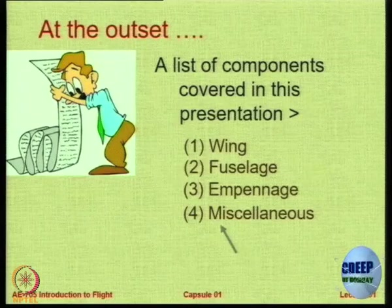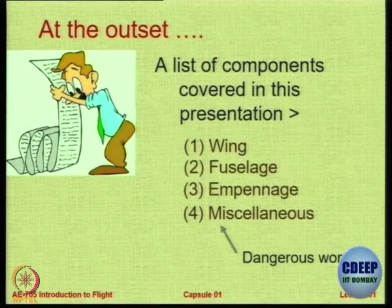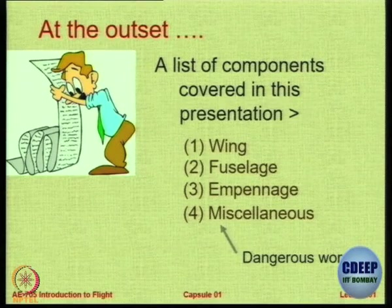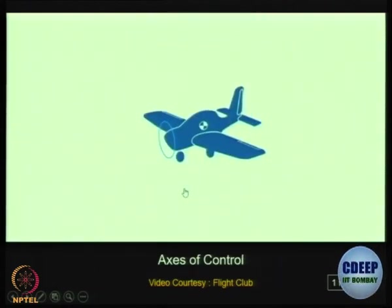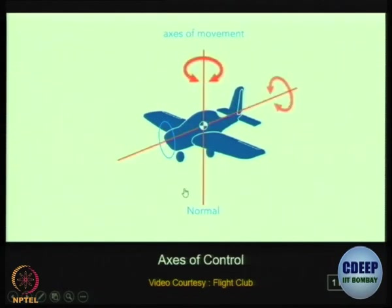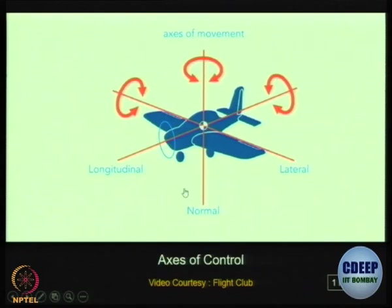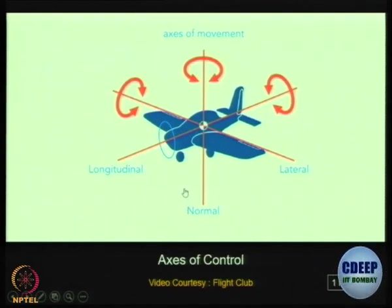Miscellaneous is a very dangerous word — it can mean anything. Before we start, it is important to understand that we follow a particular axis when we talk about aircraft. Each of the three axes moves about the centre of gravity. The aircraft's principal axes are the normal axis (vertical axis), lateral axis (along the wings, parallel to the wings), and longitudinal axis drawn from tail to nose. Each axis is perpendicular to the other two axes.